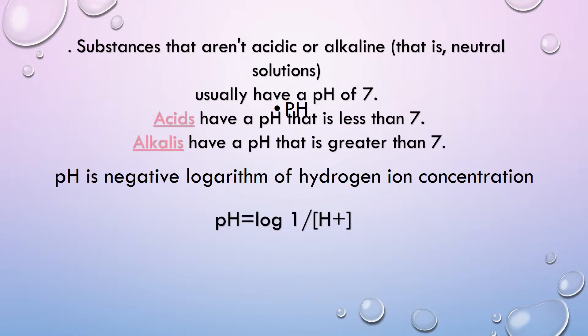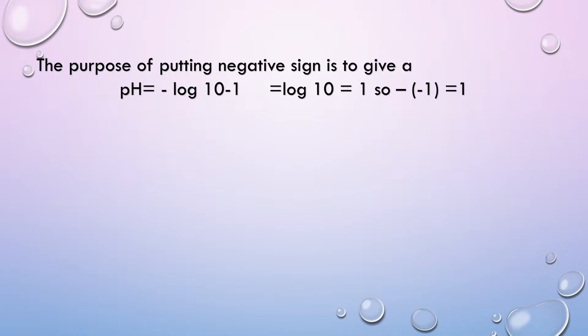pH is the negative logarithm of hydrogen ion concentration. pH is equal to log(1/[H⁺]) or negative log of hydrogen ion concentration. We always write pH with a lowercase 'p' because 'p' represents the negative log, and 'H' is written in capital as it is the elemental symbol of hydrogen. The purpose of putting the negative sign is to give a positive pH value. For example, pH equals negative log of 10⁻¹, and negative times negative equals positive, giving a value of 1.